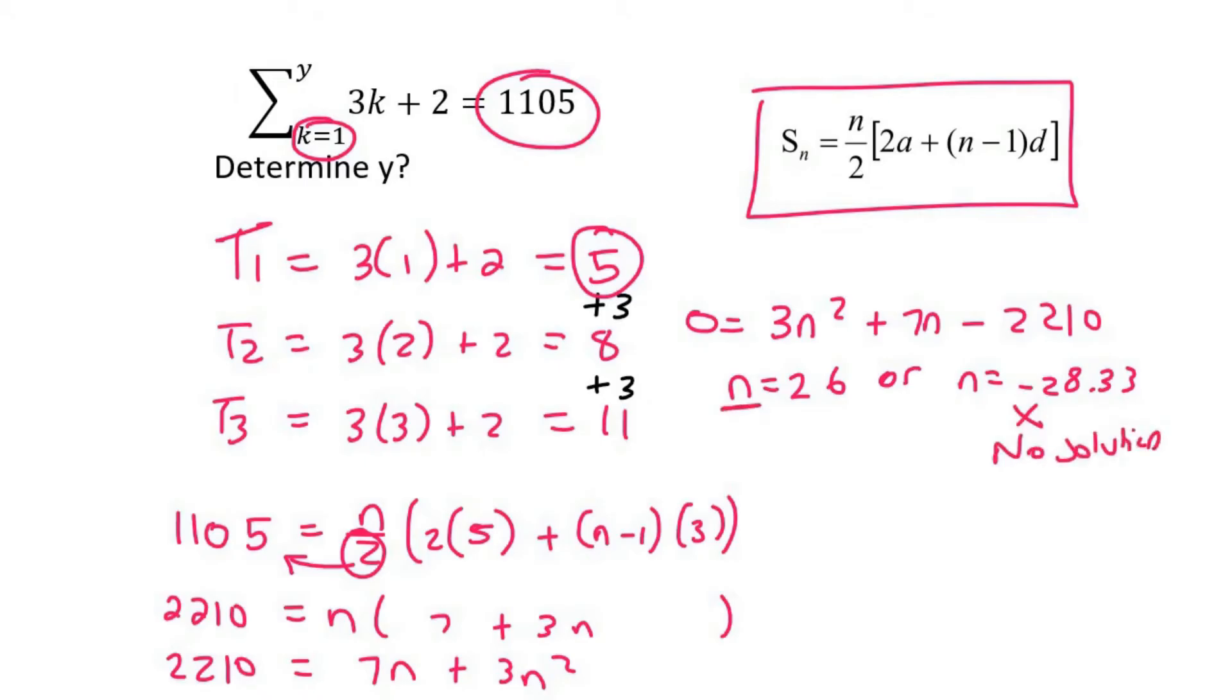Alright, so we found n, but that's not necessarily the same as y. Sometimes they are the same, but remember what I showed you in previous videos, is that to work out the number of terms, you always take the top, which is the y, minus the bottom, which is this k equals to 1, and then you always add 1.